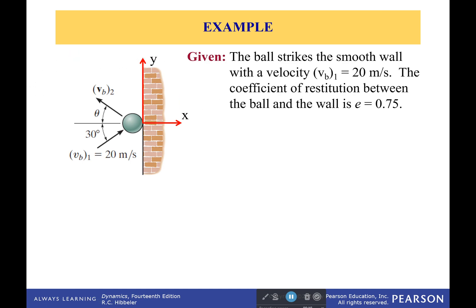We have a ball and it strikes a smooth wall with a velocity of 20 meters per second. The coefficient of restitution between the ball and the wall is 0.75.